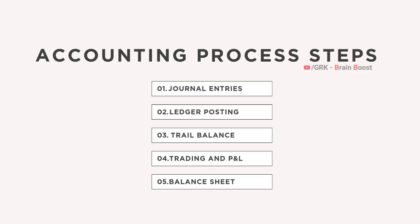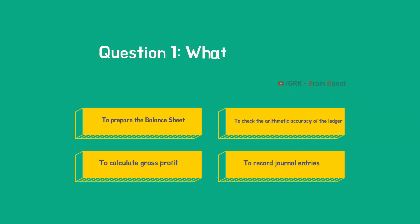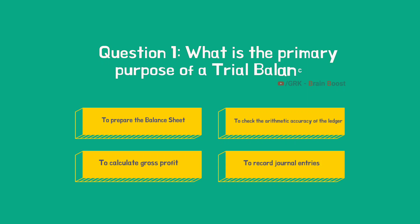These are the particular steps which we need to follow. Now let us look at the MCQs. First question: what is the primary purpose of a trial balance? As we know, the trial balance comes after ledger postings. It is prepared to ensure the mathematical accuracy of the ledger, where debits should always equal credits. So the correct option is B — to check the mathematical accuracy of the ledger.